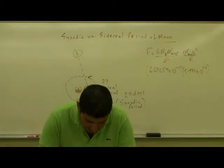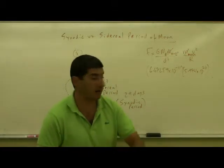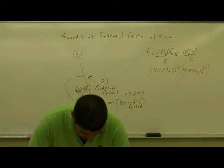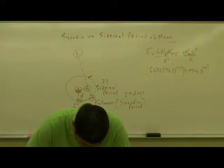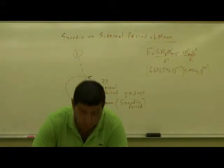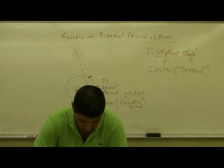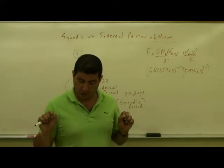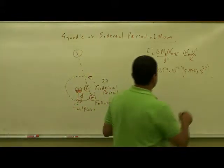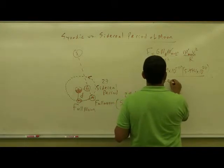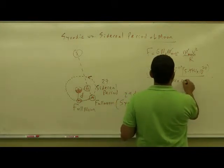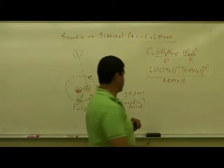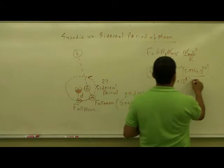The mass of the Earth is 5.974 times 10 to the 24th kilogram divided by the distance. The distance is the distance between the Earth and the Moon. And that one is going to equal 384,400 kilometers about. So it's 3.844 times 10 to the 8 meters. Square that.